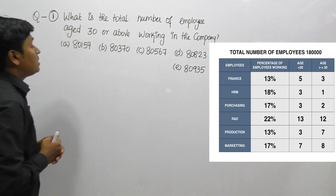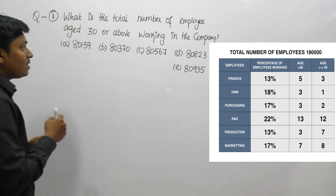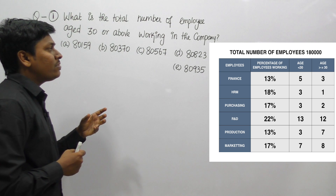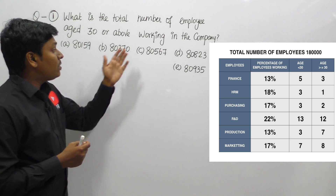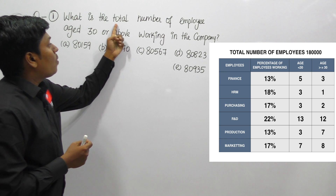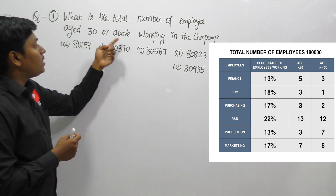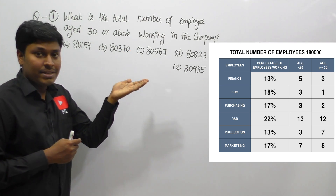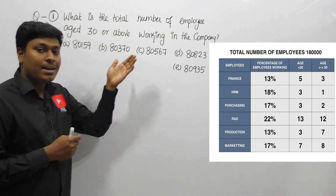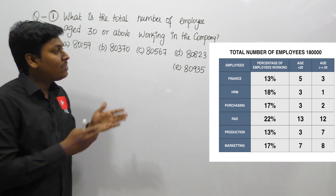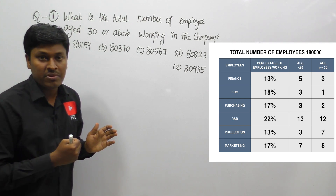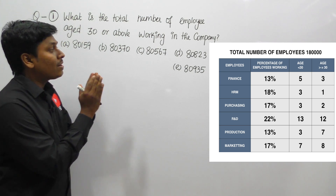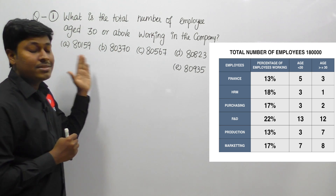Question number one: what is the total number of employees aged 30 or above working in the company? Our target is to find all DA equations faster. We need to find how many employees are there in finance, HRM, purchasing, R&T, production, and marketing — everything. If you follow the normal procedure, it will take you more than five minutes. My advice is: if you want to crack this question faster, always look at the options carefully.